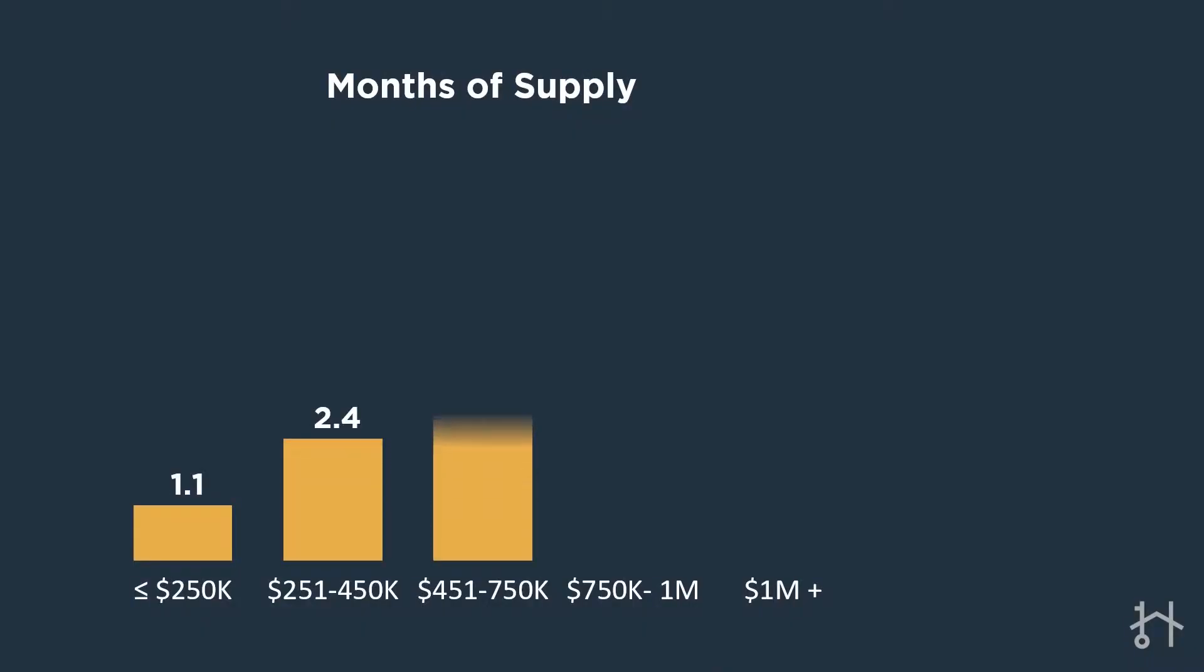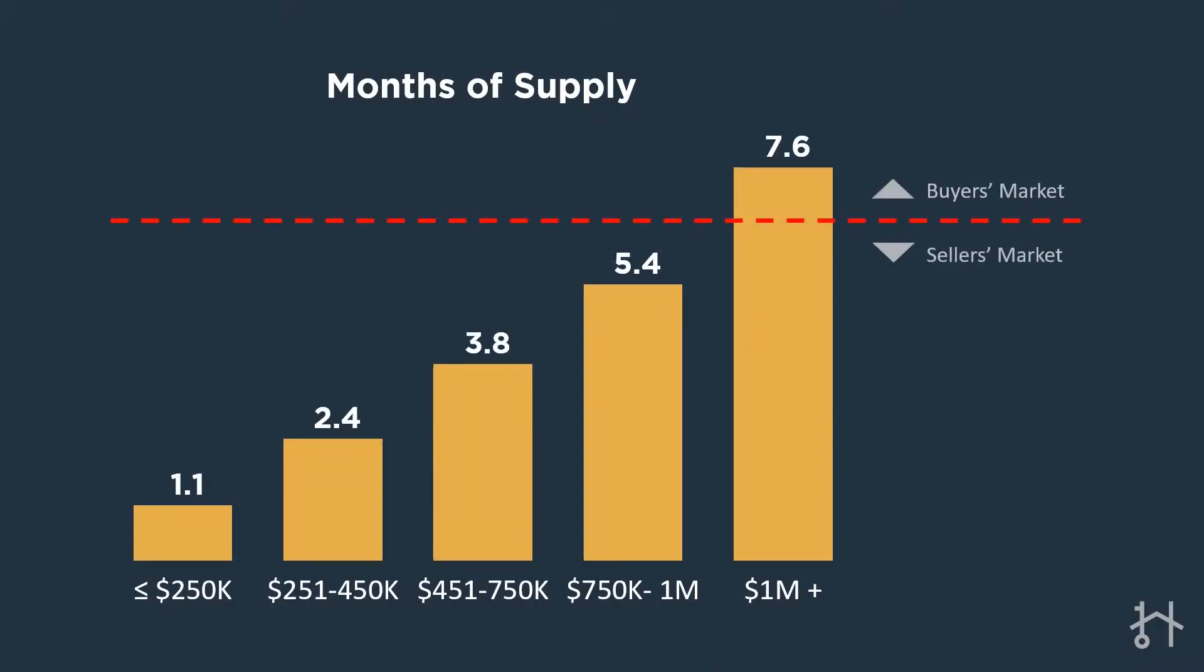If nobody were to list their house now until the end of the summer, there would be no more homes left on the market. That's basically how that measure works. Now it does vary by price point. When you look at the lower price points below $250,000, there's only a month of inventory, and then obviously it creeps up as you go up the price point.